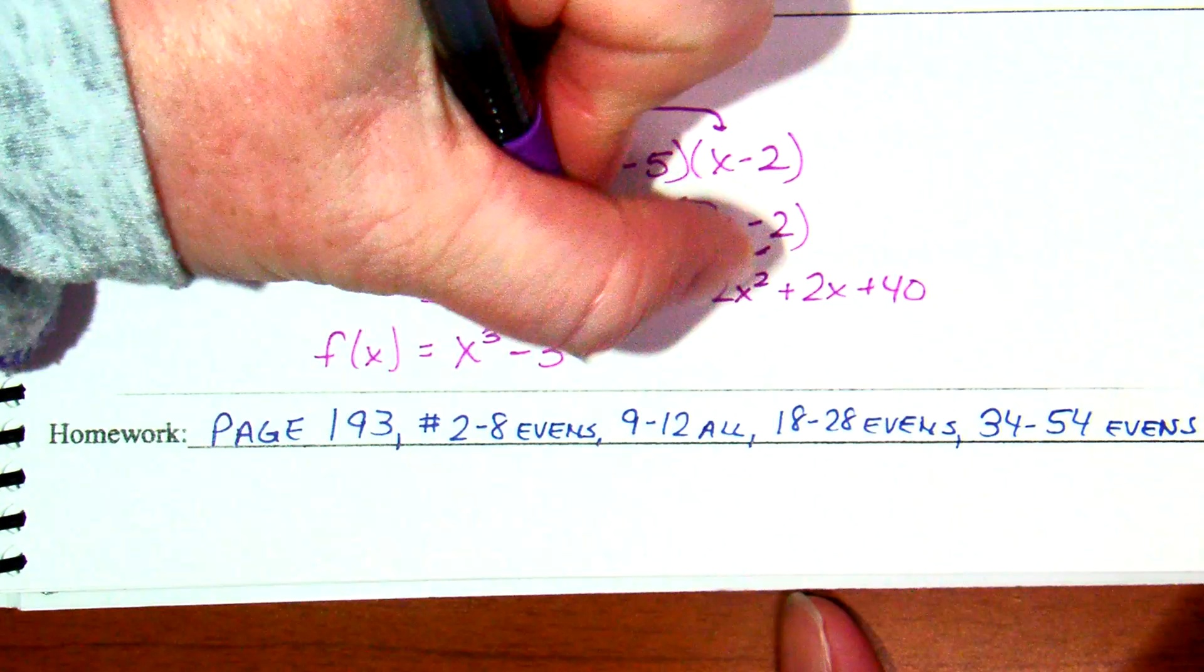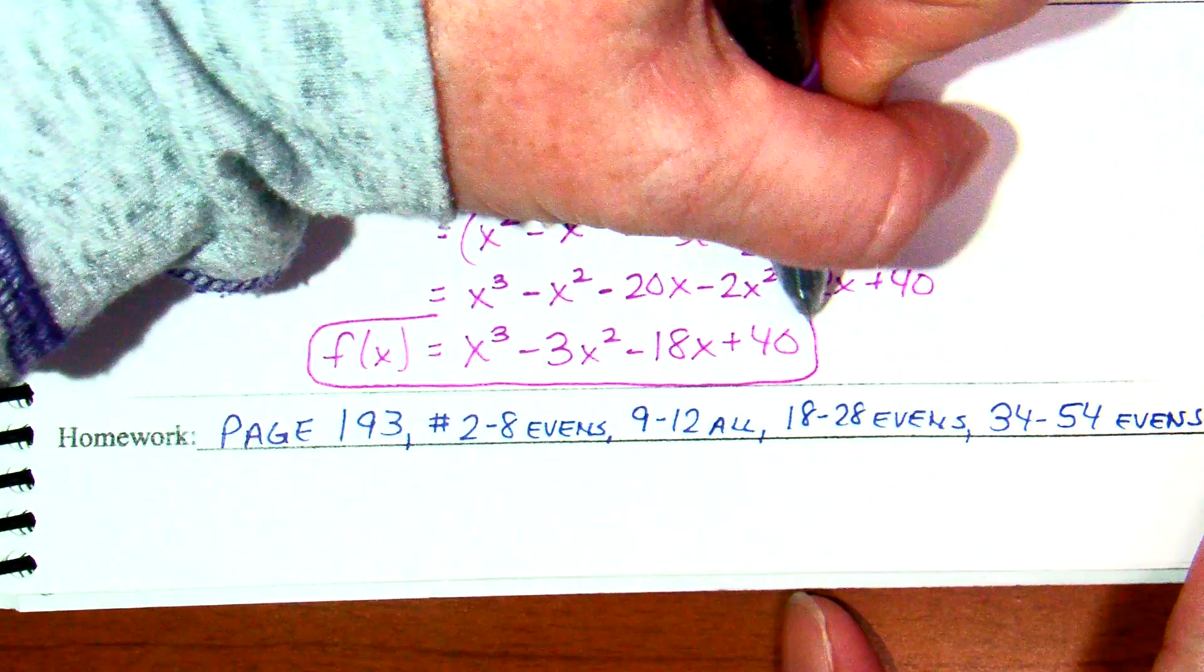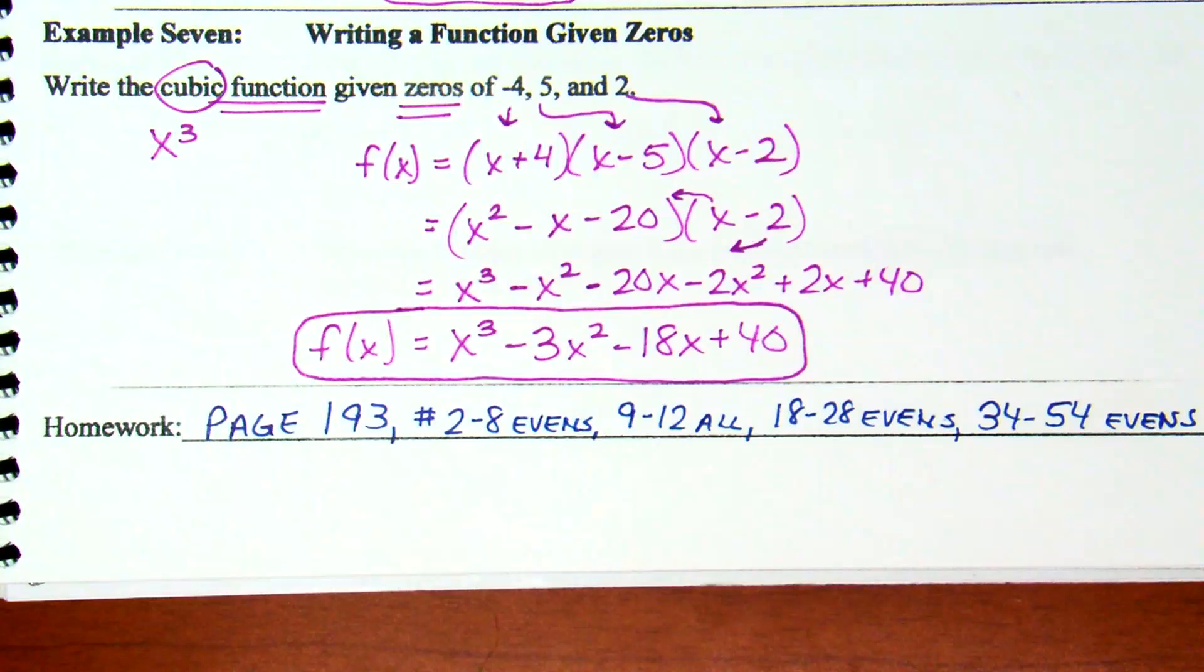Clean up and we are there. Yes. Okay. I've got x to the third. Minus x squared and minus 2x squared is going to be minus 3x squared, minus 20x plus 2x is minus 18x plus 40. Okay, folks.